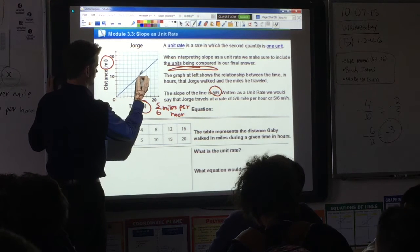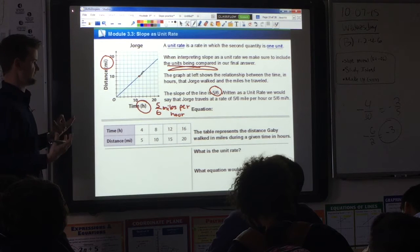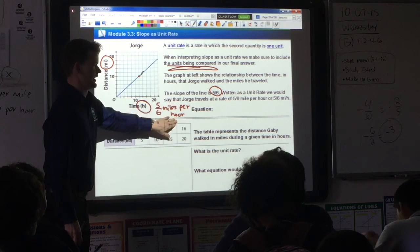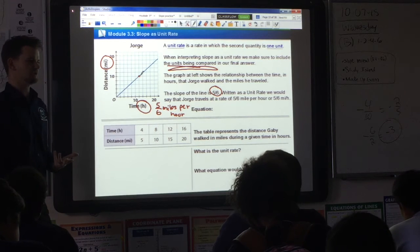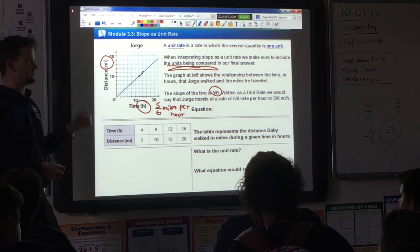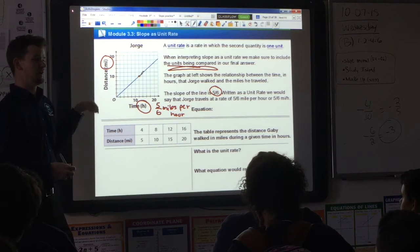If you were to go here and find a point and calculate the slope, you would get 5/6. Simply write the slope and compare the two units: miles per hour. We can also write an equation from this line. We write equations using slope in what format? Y equals kx. It's constant. It's slope, so it's also y equals mx.